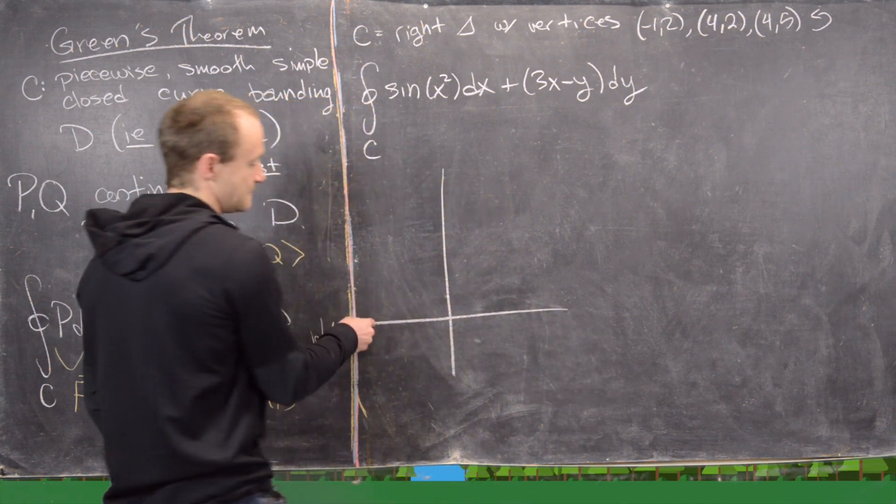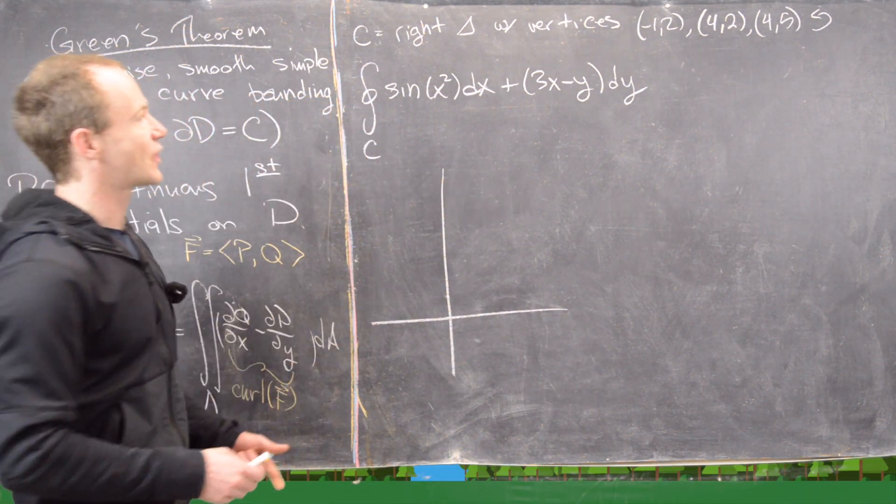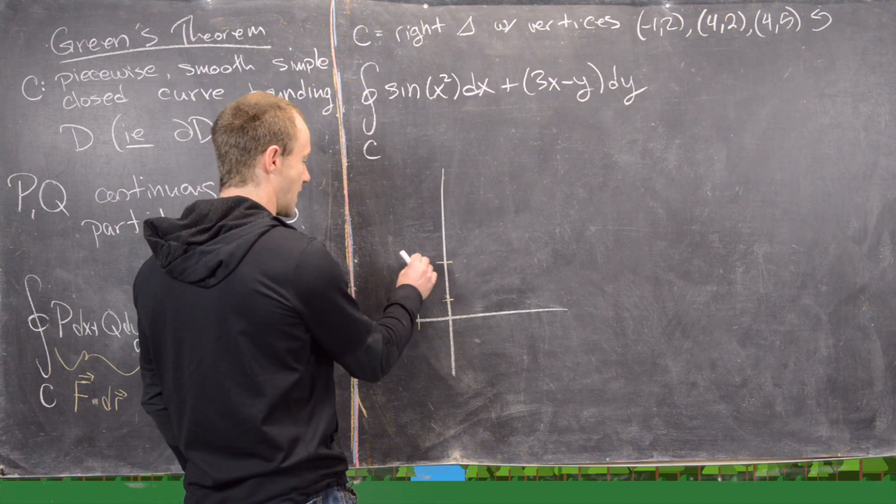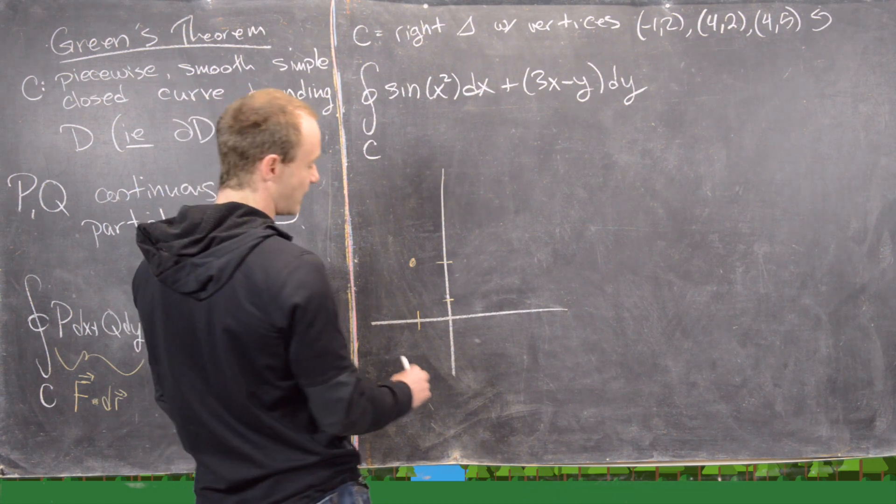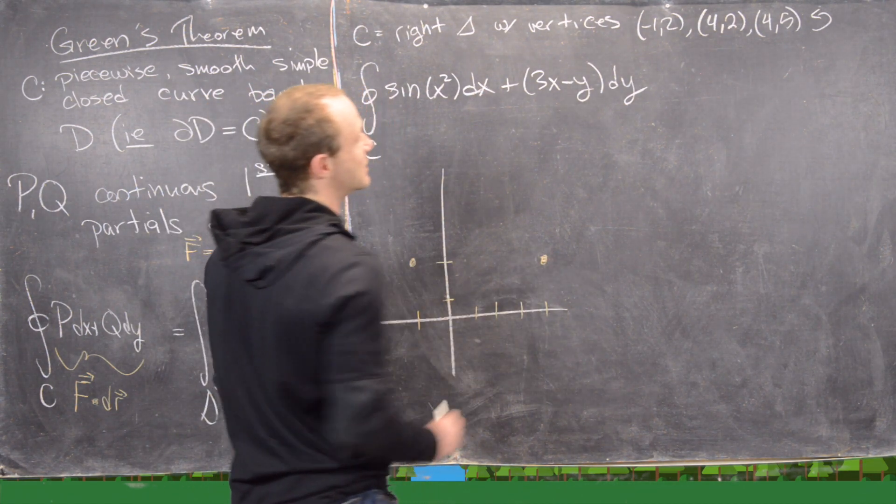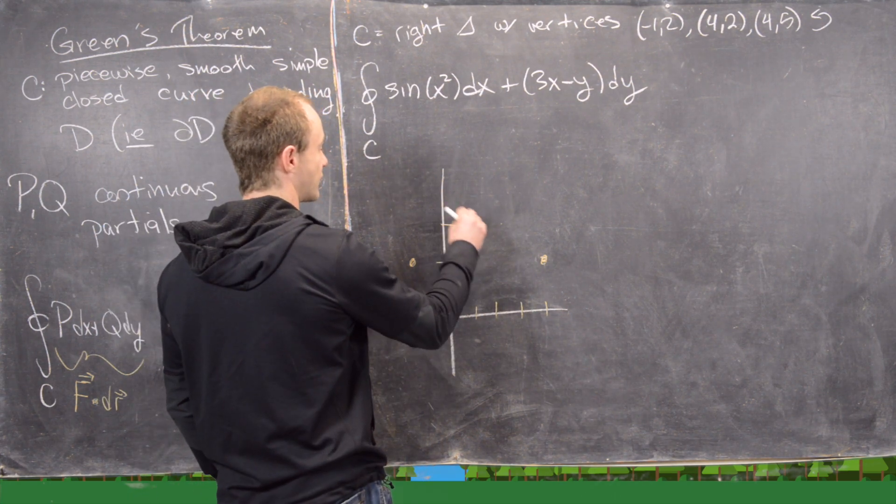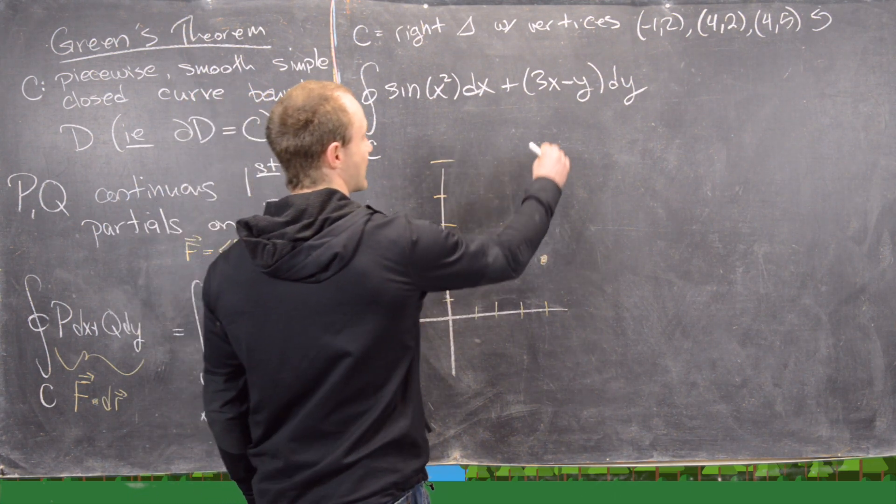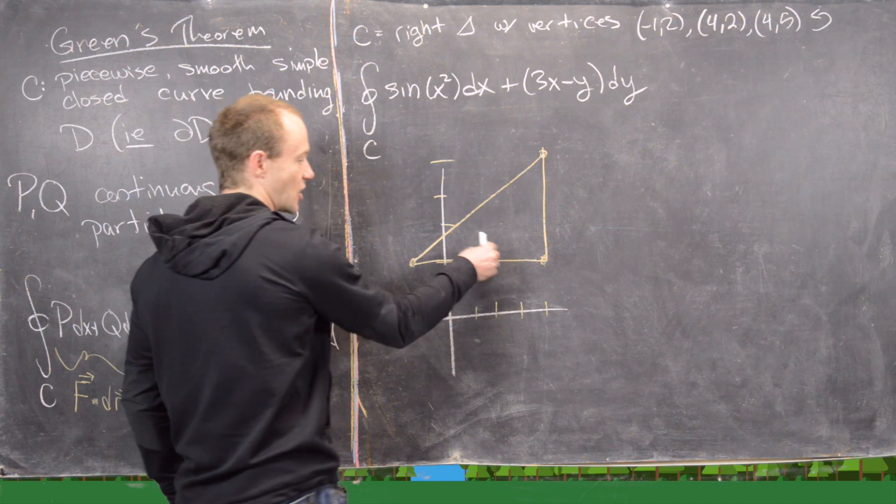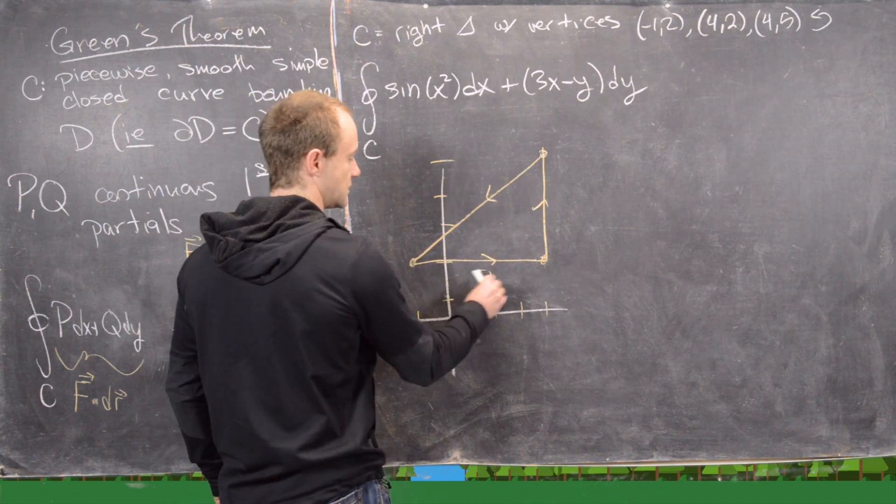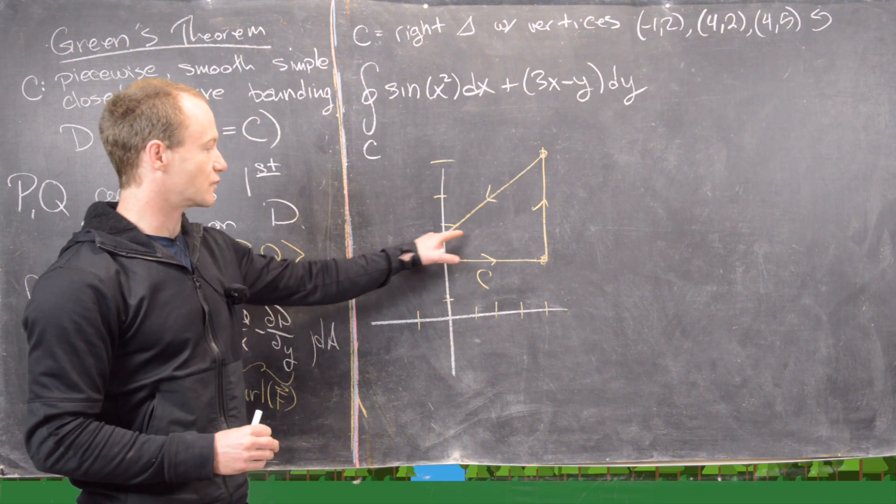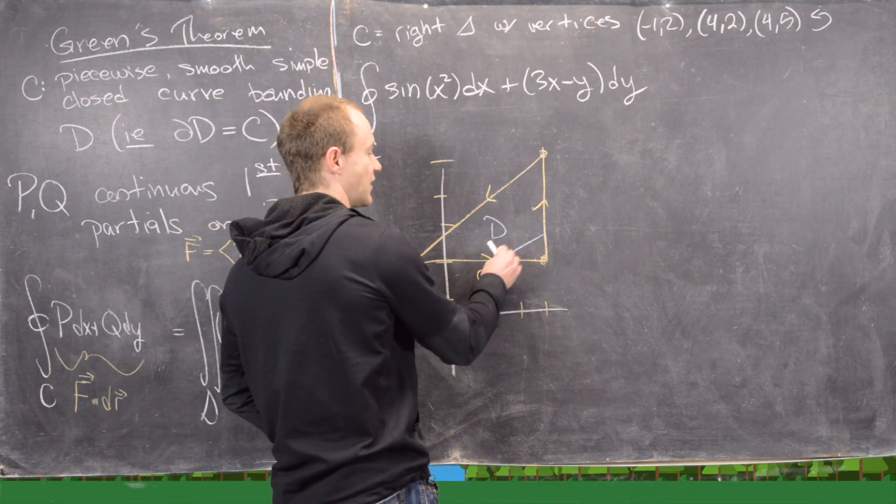There's my xy plane. I need the point (-1,2) on there. That's going to be right about here. Then I need my point (4,2). So one, two, three, four, two. That's going to be right about there. And then (4,5). So three, four, five. That's going to be right about up here. So there is my curve C, which is oriented positively, which makes the region on the inside D, this thing right here.